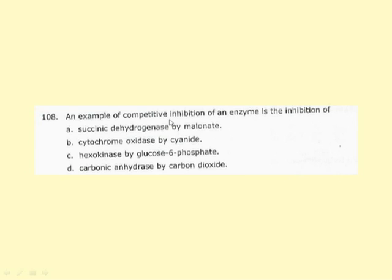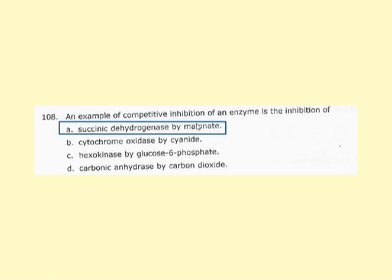An example of competitive inhibition: inhibition of succinate dehydrogenase by malonate; cytochrome oxidase by cyanide; hexokinase by glucose-6-phosphate; carbonic anhydrase by carbon dioxide. Carbon dioxide is a substrate/product of carbonic anhydrase. Glucose-6-phosphate is a product of hexokinase. Cyanide is unrelated to the substrate. The correct answer is succinate dehydrogenase by malonate — succinate and malonate have similar structures and malonate is a classic substrate analog competitive inhibitor.